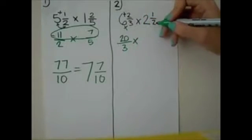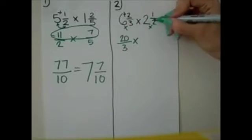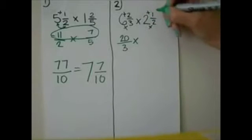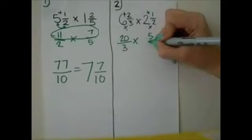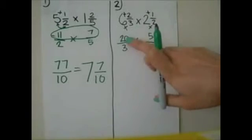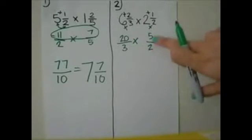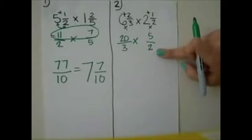Now we've got to change this one, 2 times 2 equals 4, plus 1 equals 5, same denominator 2. So 20 thirds times 5 halves.